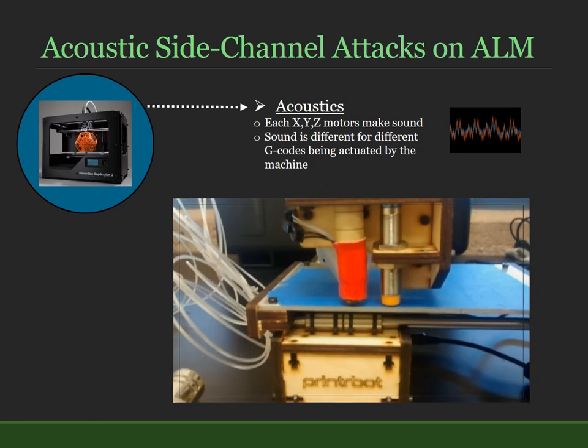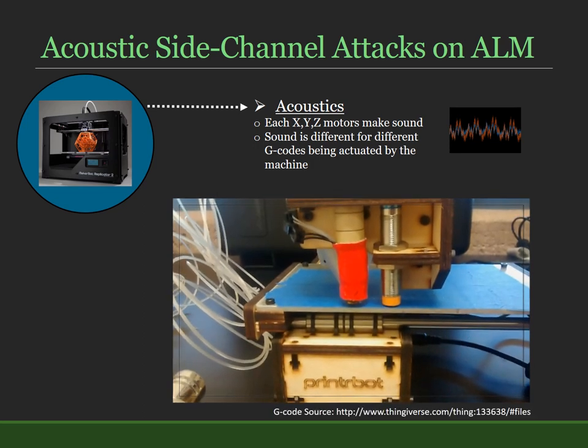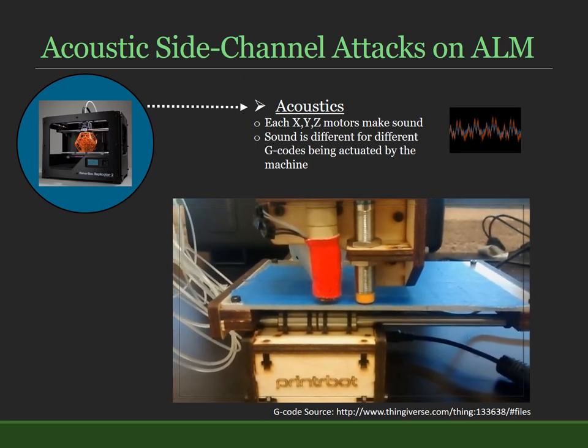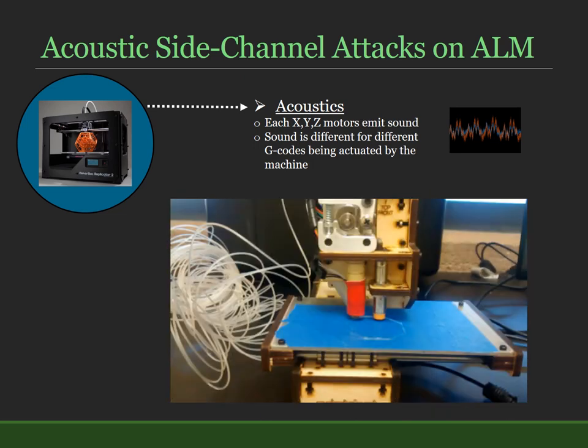3D printers use stepper motors for actuating control movement. The internal structure of these stepper motors consists of permanent and electromagnets. When the current applied to the electromagnet varies, the stepper motor produces audible sound corresponding to the varying current. We can even play music by passing corresponding G-code to these printers. Even when printing meaningful objects, the 3D printer emits audible sound.